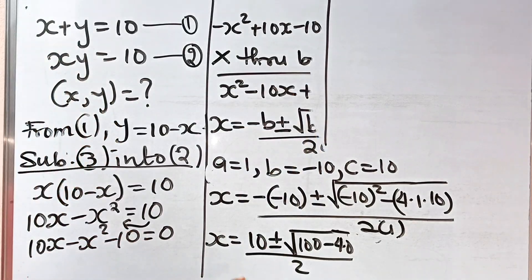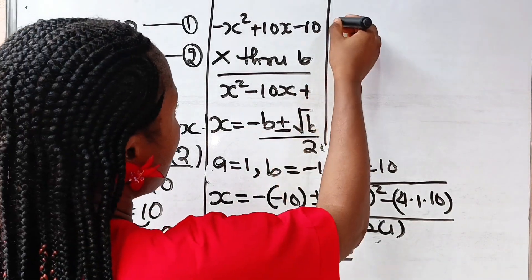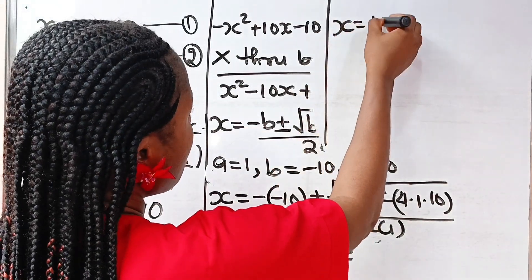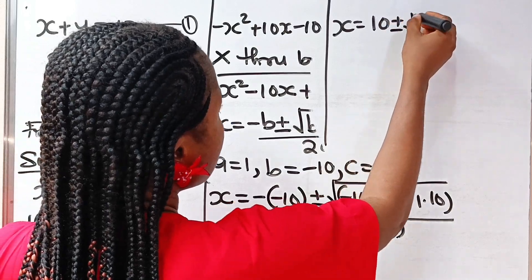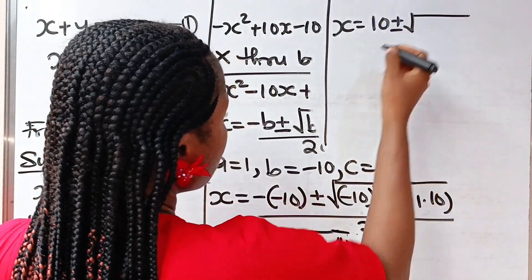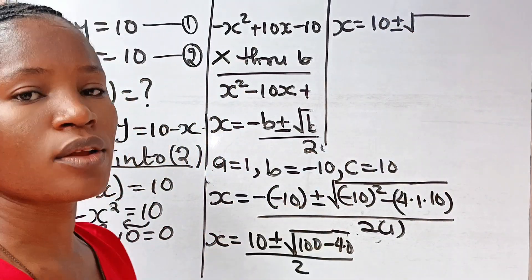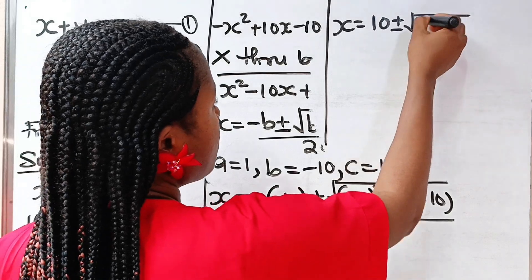Now if we solve further, we have x is equal to 10 plus or minus the square root of — 100 minus 40 gives us 60 — divided by 2.